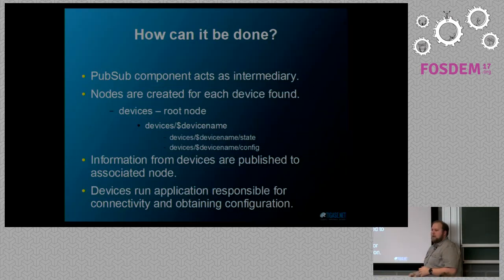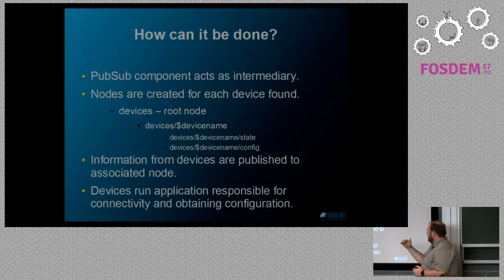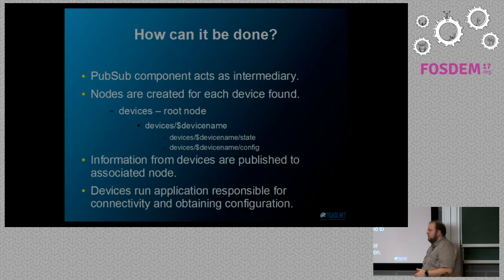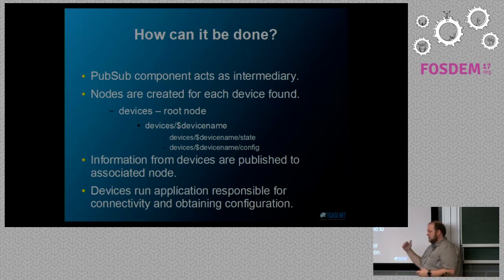The PubSub node acts as an intermediary. We've designed it so that devices sit under a root node, and underneath that root node you have a device name for each device on your network. Then you have a state node and a config node. State shows the current temperature, and config allows configuration changes — only permitted through an admin user. Unauthorized users can only receive state information from the node. Information is published to each device's associated node, and nodes can be renamed on the fly to 'upstairs', 'downstairs', 'living room', or whatever you need.